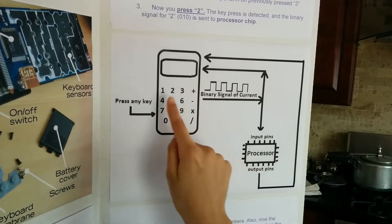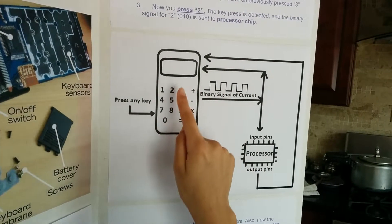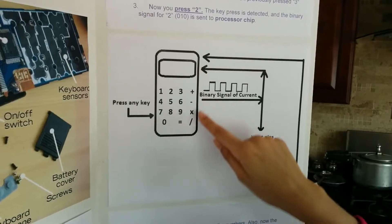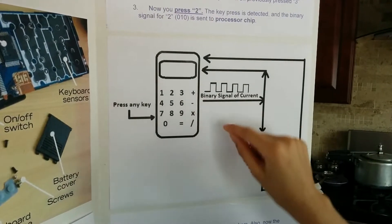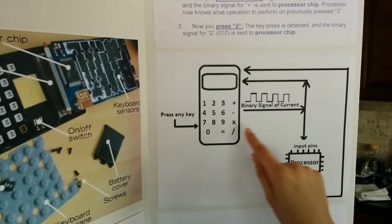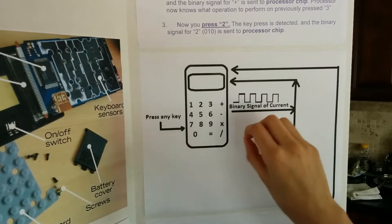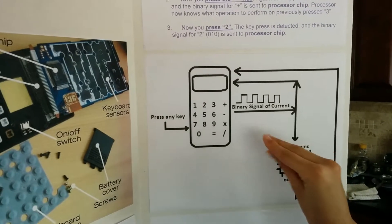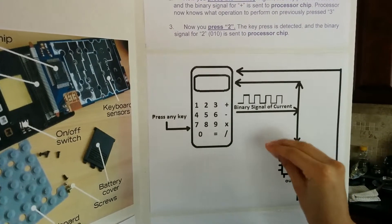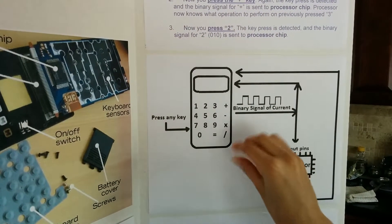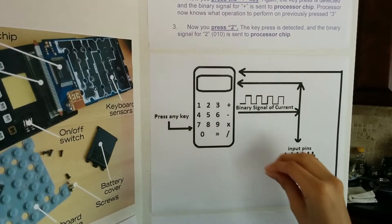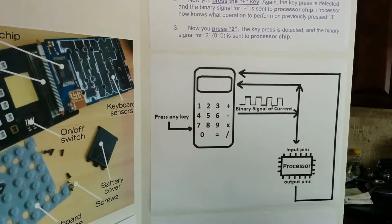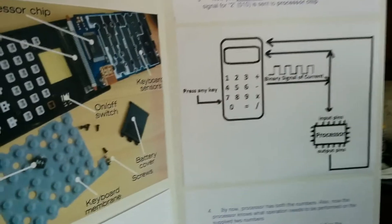And then when you press two, there's a binary signal for two — that's zero, zero, one, zero. So it does: no current, no current, no current, current, no current. And that gets sent to the processor chip.